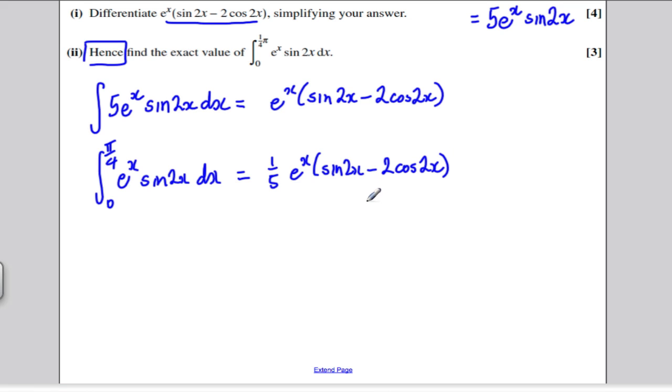And we're going to evaluate that between 0 and pi by 4. I'm going to take the fifth out, it just confuses matters. I'm going to evaluate that between 0 and pi by 4. Now we're down to a simple numeracy problem. Substitute in pi by 4, substitute in 0, take the answers away from each other. Keep the fifth out of the front. So let's think what happens when the pi by 4 goes into each of these things here.